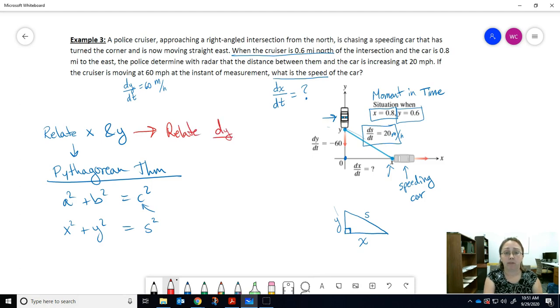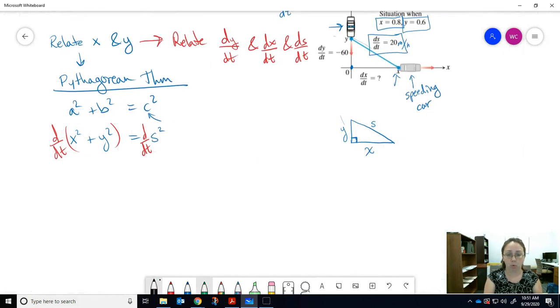We have a relationship between x and y. Now we need a relationship between their derivatives dy/dt and dx/dt. And because we have s, we're also going to have ds/dt that we need in our relationship, which luckily they've given us information on. How do we do that? We use implicit differentiation to take the derivative of both sides with respect to time.